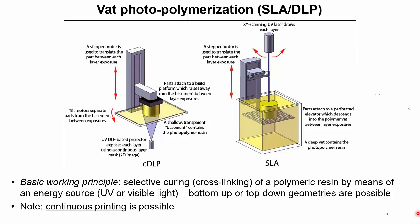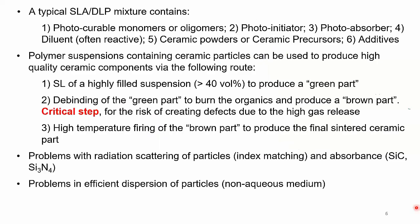There are advancements that now allow for continuous printing, which can provide fast manufacturing. For ceramics, a typical photo-curable mixture needs to contain photo-curable monomers or oligomers, a photo-initiator to start the cross-linking reaction, a photo-absorber to control the penetration depth of light inside the liquid, often a reactive diluent, and then the ceramic powders themselves — or a ceramic precursor such as a pre-ceramic polymer or sol-gel material — plus additives.